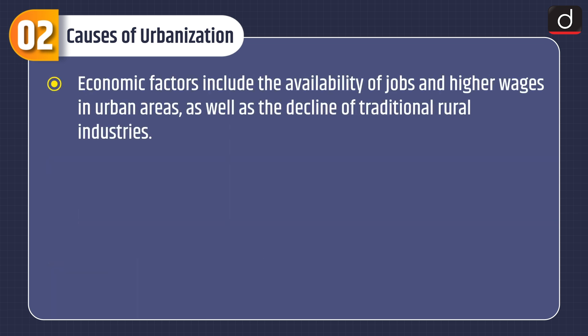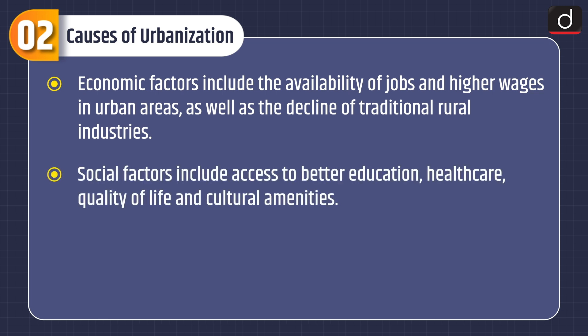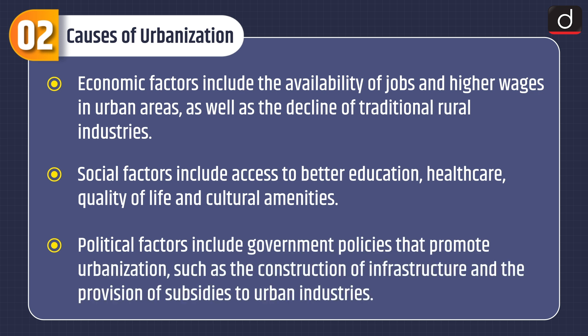Economic factors include the availability of jobs and higher wages in urban areas, as well as the decline of traditional rural industries. Social factors include access to better education, healthcare, quality of life, and cultural amenities. Political factors include government policies that promote urbanization, such as the construction of infrastructure and the provision of subsidies to urban industries.